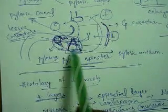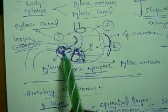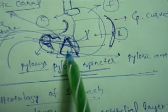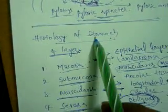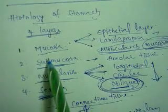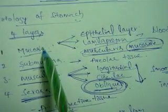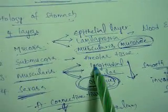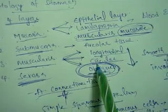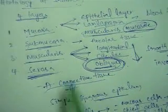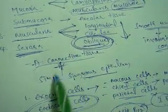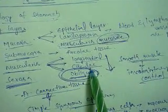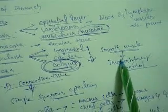This region is called as pylorus. Here we can observe the pyloric sphincters and this region is called as pyloric antrum. In the histology of the stomach we can find four layers: mucosa, submucosa, muscularis, and serosa. Mucosa is divided into three layers: epithelial layer, lamina propria, and muscularis mucosa. Submucosa consists of areolar tissue. Muscularis consists of longitudinal, circular, and oblique muscle layers. Serosa consists of areolar connective tissue plus simple squamous epithelium. These three muscle layers are formed by smooth muscle, so they are under involuntary control.